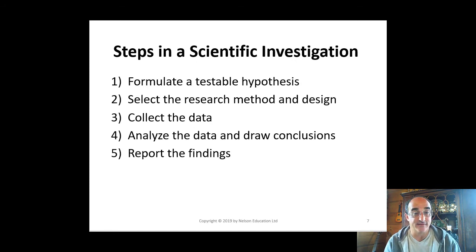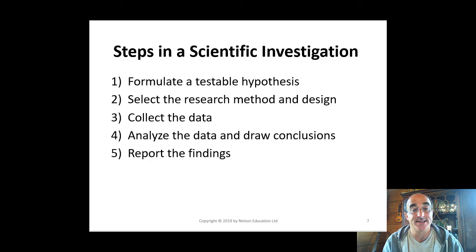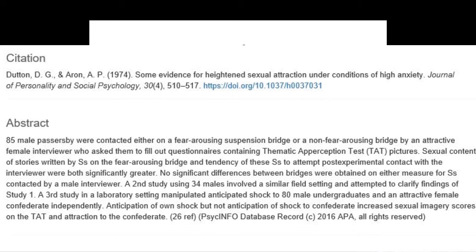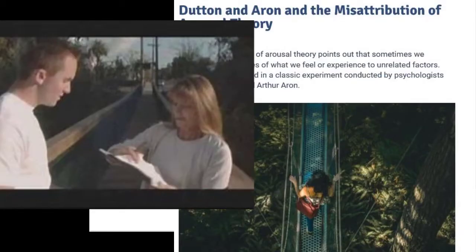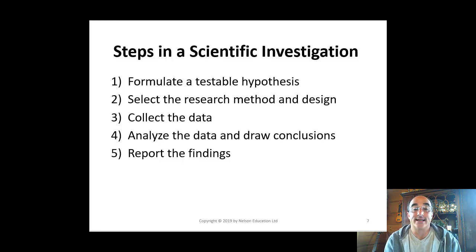Let's look at the steps in a scientific investigation further, using the featured study: Dutton and Aaron, 1974, called 'Some Evidence for Heightened Sexual Attraction Under Conditions of High Anxiety,' published in the Journal of Personality and Social Psychology. In this study, 85 male passersby were contacted either by a fear-arousing suspension bridge or a non-fear-arousing suspension bridge by an attractive female interviewer who asked them to fill out questionnaires containing Thematic Apperception Test (TAT) pictures. Step one was to formulate a testable hypothesis: that fear arousal can be mistaken for attraction or sexual arousal in certain contexts.